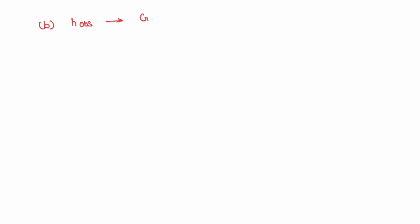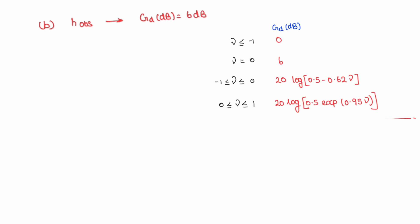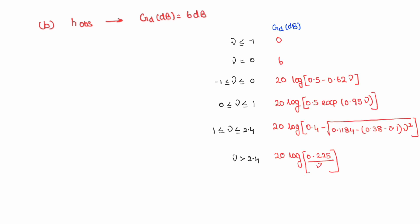Now for part two: find the height of the obstacle to induce a 6 dB loss. That means Gd equals 6 dB. Looking at the table, when Gd equals 6 dB, V equals 0. Under diffraction, we have three cases depending on V: V positive, V negative, and V equals zero.